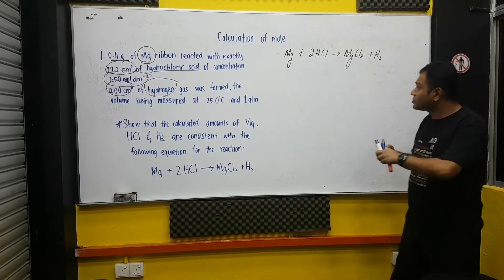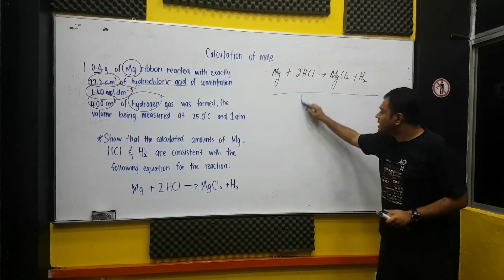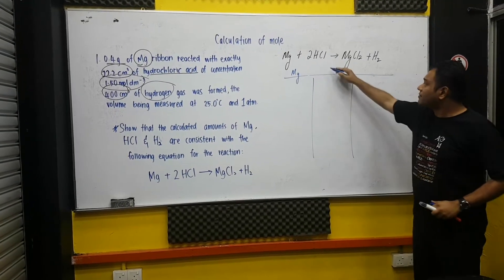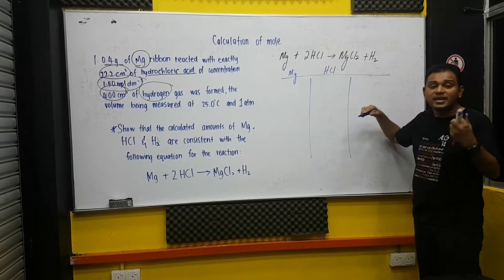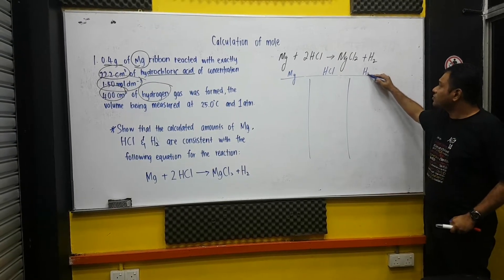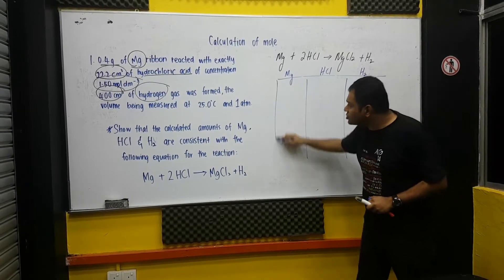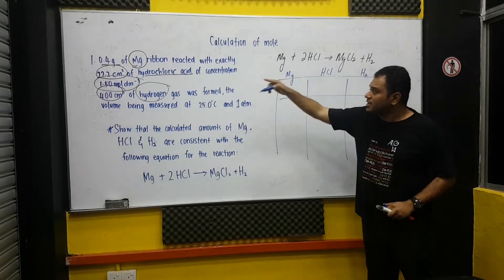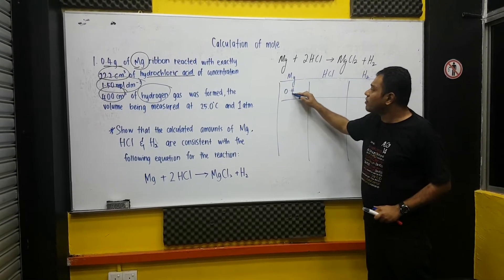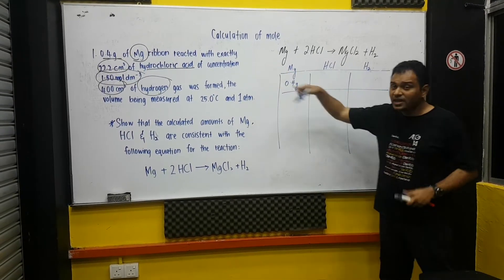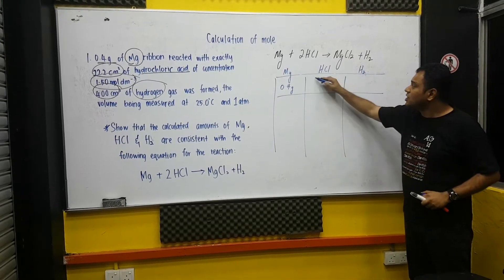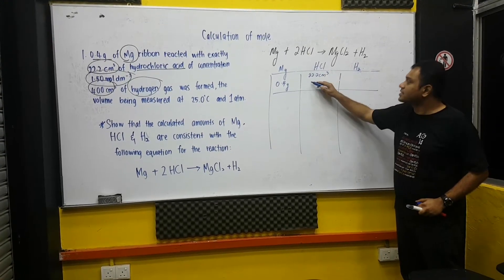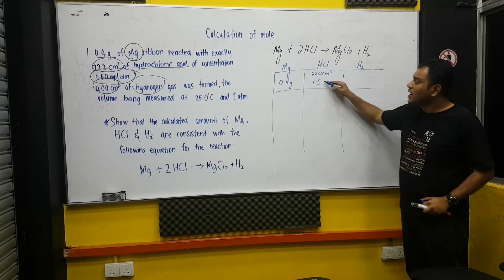What shall I do? Yes, I will do the table where it consists of magnesium. I have hydrochloric acid. Yes, I also have hydrogen gas. The information that's given for each of it. The first one, it is given 0.4 gram of this thing. Then I have this 22.2 cm³ with 1.5 molar. This is the, it is referred to the concentration.